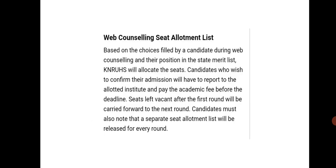After that, candidates have to go for web counseling, that is seat allotment. Based on the choices filled by the candidate during web counseling and their position in the state merit list, KNRUHS will allocate the seat. Candidates who wish to confirm their admission will have to report to the allocated institute and pay their academic fee before the deadline.